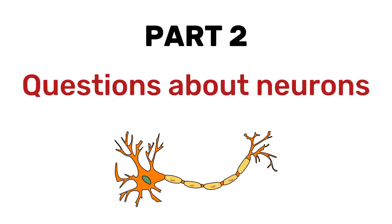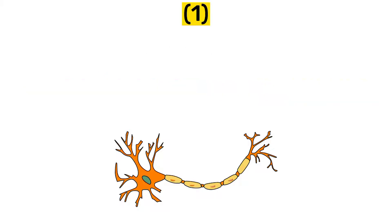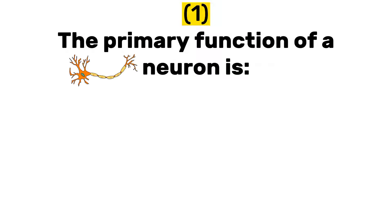Hey guys, this is part 2 of the nervous system. You can check the link to the first part in the description page of this video. Number one: the primary function of a neuron is coordination of the body, conduction of electrical impulses, or production of ATP?